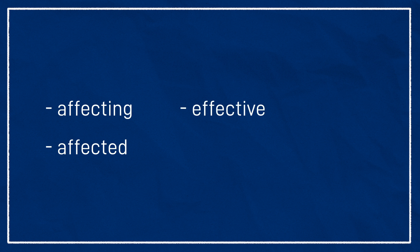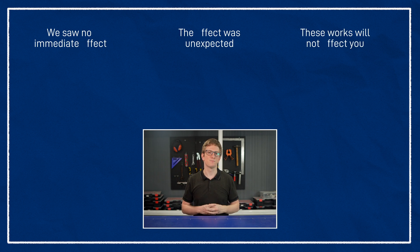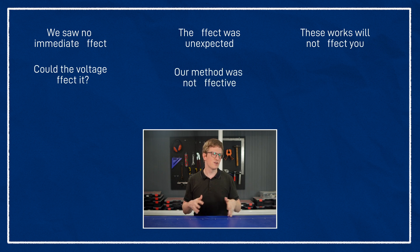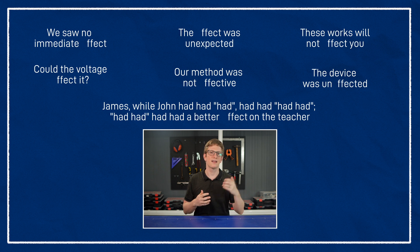That last one brings me to another point. Many of the prefixes and suffixes that we use will only work on one or the other. So 'affecting' and 'affected' will have an A, while 'effective' will be an E. And the phrase 'in effect' effectively means the same as 'effectively,' so it will have an E. Our REAM trick can be harder to use on some of these, because the meanings change a little bit and get messier — in some cases we're turning these words from nouns or verbs into adjectives. Now it's time to test yourself. I'll put some up on the screen now, and you can pause it and figure out which one you think works, and then after a few seconds I'll put up the hints and then the answers. We saw no immediate effect. The effect was unexpected. These works will not affect you. Could the voltage affect it? Our method was not effective. The device was unaffected. And finally, a fun phrase you're unlikely to come across every day: James, while John had had 'had had,' 'had had' had had a better effect on the teacher.